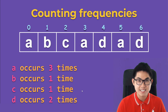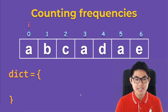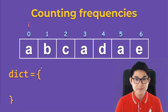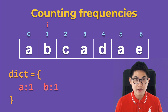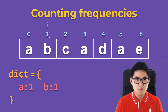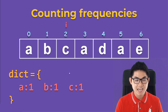Let me show you how to get this frequency table. The first step is to create an empty dictionary, and then we traverse through the array starting at the beginning. We see 'a' — is 'a' inside this dictionary? No, it is not, because the dictionary is empty, so we put 'a' into the dictionary and set it to one occurrence. We then move to 'b' — not in the dictionary, so we put 'b' in with one occurrence. Then 'c' — not in the dictionary, so we put 'c' in with one occurrence.